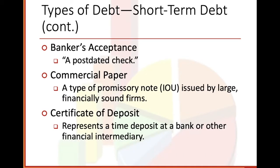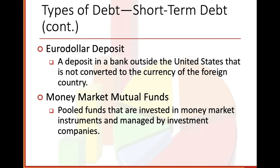Continued short-term debt: banker's acceptance — a post-dated check. Commercial paper, a type of promissory note, an IOU issued by large, financially sound firms. Certificate of deposit, or CD — represents a time deposit at a bank or other financial intermediary. Eurodollar deposit: a deposit in a bank outside the United States that is not converted to the currency of the foreign country. Money market mutual funds: pooled funds that are invested in money market instruments and managed by investment companies.